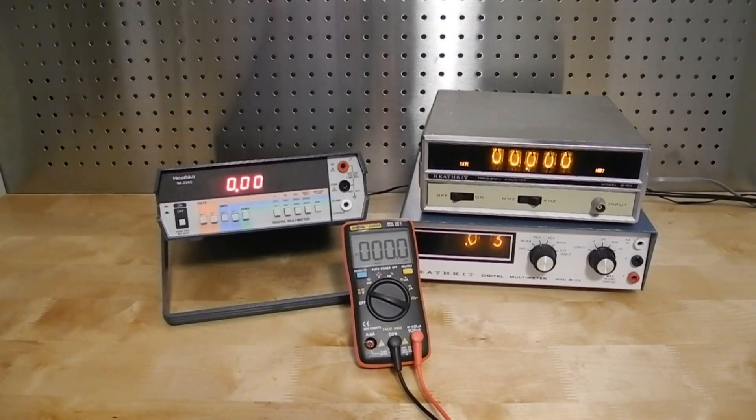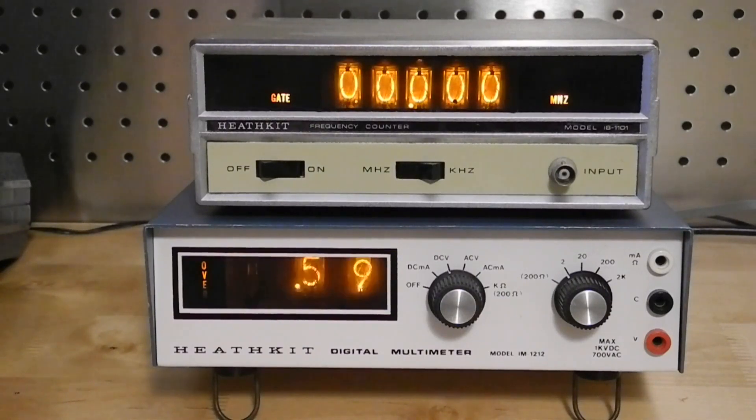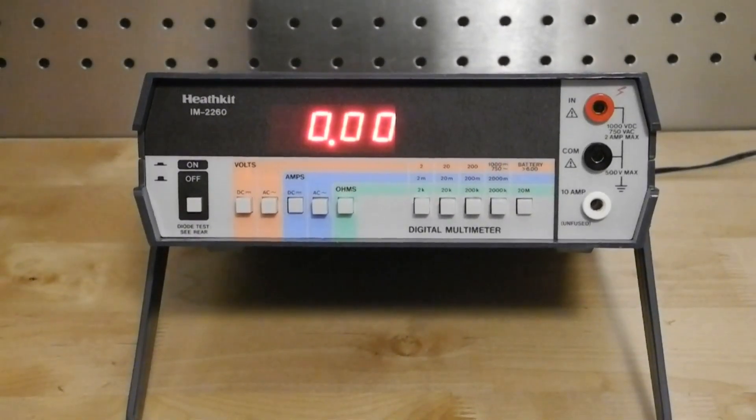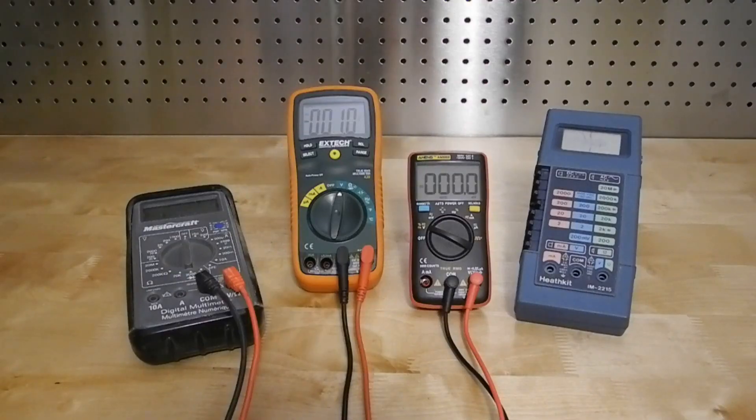With digital multimeters or DMMs, the most obvious change over time was in the type of display. Here I have a few examples. A high voltage neon, often called Nixie display. A red 7 segment light emitting diode or LED display. A liquid crystal or LCD display.